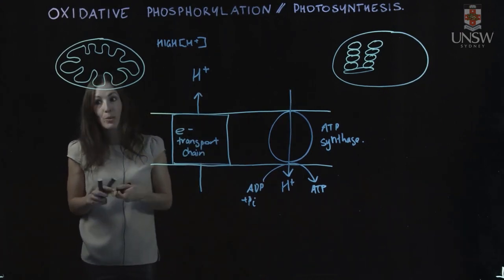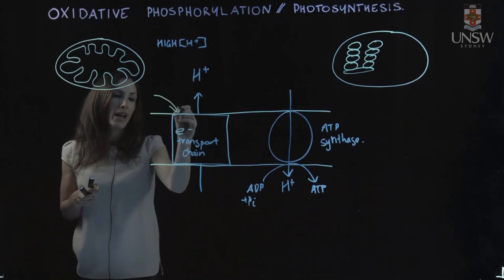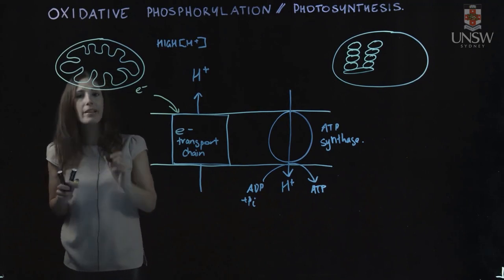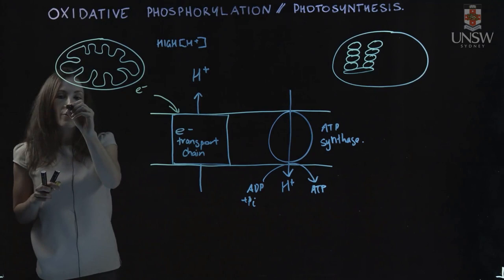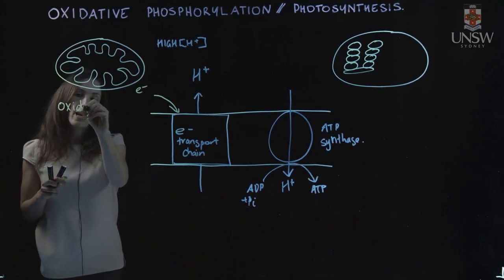What are some of the differences between them? The source of electrons that enter. So we have electrons entering the electron transport chain, and the source of electrons from mitochondria is we have oxidized sugars. So sugars get oxidized.